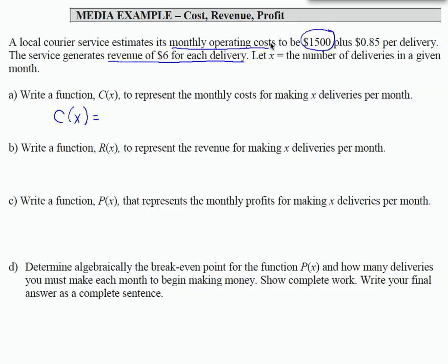So we have $1,500. That is a flat rate. No matter how many deliveries we make, it's going to cost us $1,500 to operate our business. Plus $0.85 per delivery. So every delivery we make, we are going to incur a cost of $0.85.